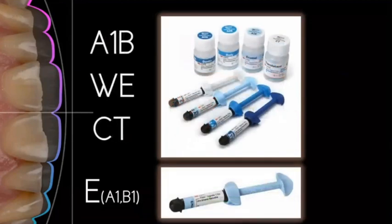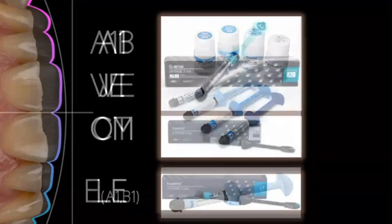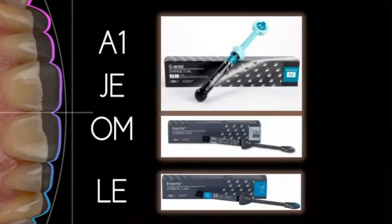For 3M, use an A1 body shade for the body, White Enamel for the proximals, Clear Translucent for the incisal, and for the enamel shade — A1 or B1 — for the facial surface. For GC, I love Essentia — use Gingival A1 for the body, Junior Enamel for the proximals, Opalescent Modifier for the incisal, and Light Enamel from Essentia for the facial layer, which is about an A1 or slightly lighter.